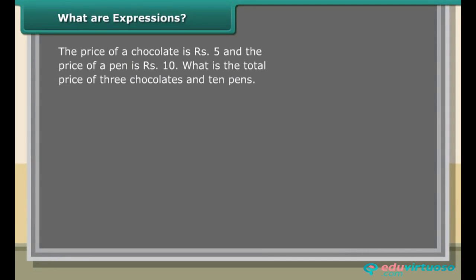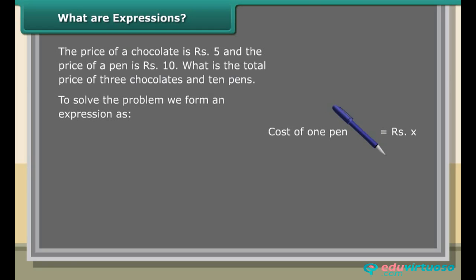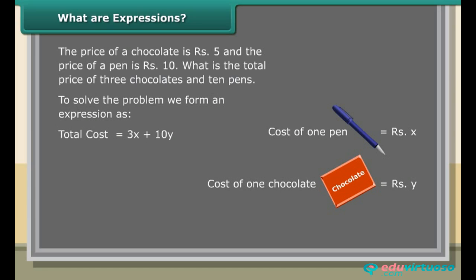What are expressions? The price of a chocolate is rupees 5, and the price of a pen is rupees 10. What is the total price of 3 chocolates and 10 pens? To solve this problem, we form an expression: cost of 1 pen = x, cost of 1 chocolate = y. Cost of 3 chocolates = 3y, cost of 10 pens = 10x. Total cost = 3x + 10y = 3×5 + 10×10 = 15 + 100 = 115 rupees.